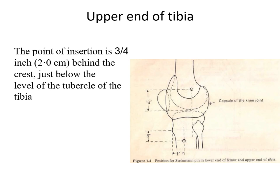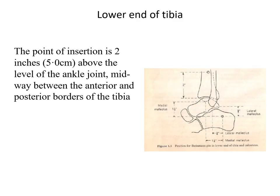For the upper end of tibia, the reference point is the tibial tuberosity. The pin is inserted 2 centimeters posterior and 2 centimeters inferior to the tibial tuberosity. It must be applied from lateral to medial direction, as the common peroneal nerve is located at the upper end of the fibula and could be damaged if the pin is inserted blindly from the medial to lateral side.